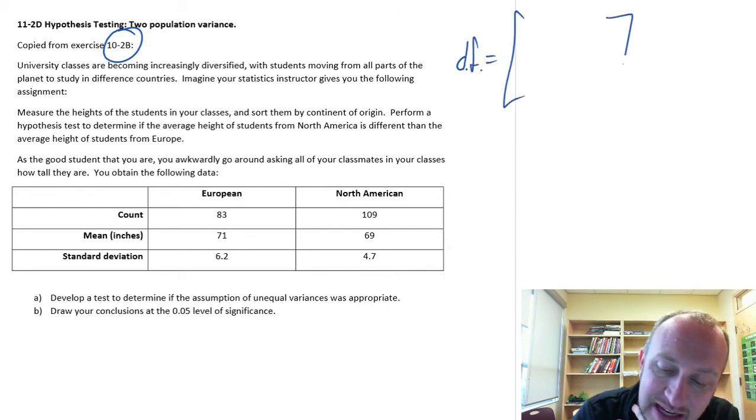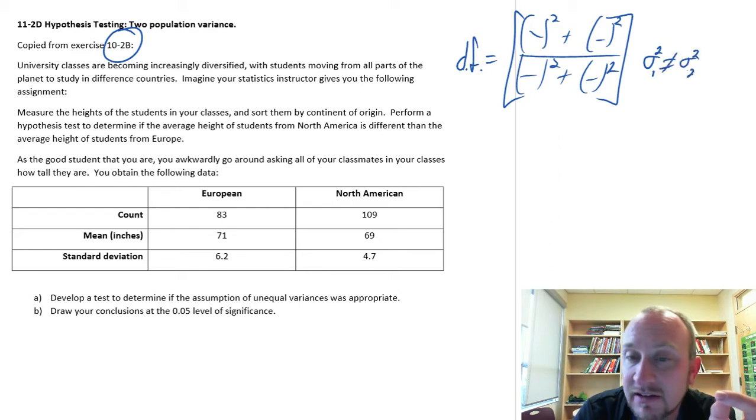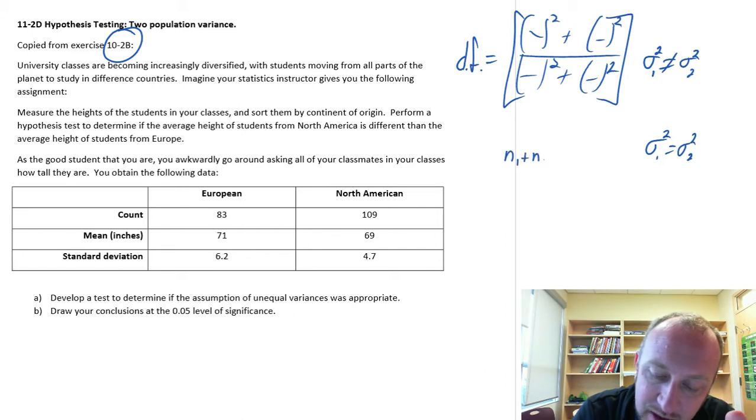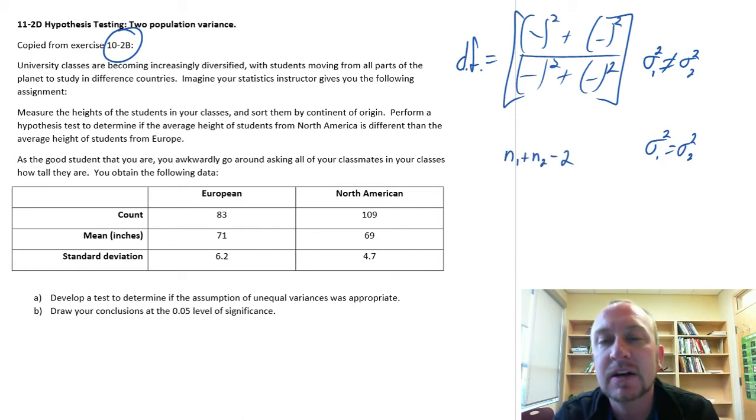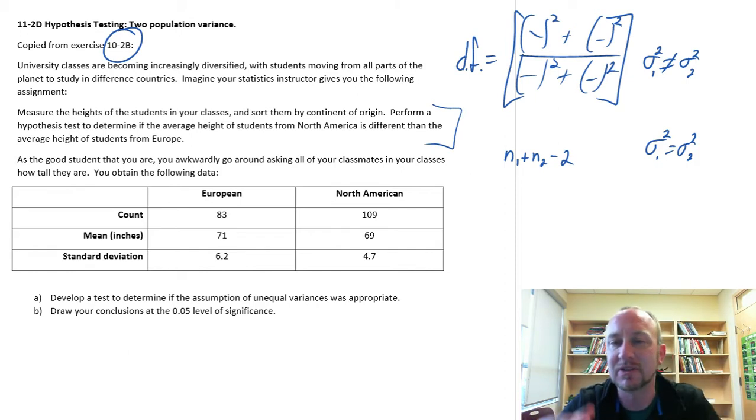One was that big ugly formula with all of these things squared. That formula was only necessary if we had reason to believe that those two population variances were unequal. If the variances were equal, then degrees of freedom would have been simply n1 plus n2 minus 2. In this exercise, we don't need to go through the whole thing. We're looking at different heights of students by continent.